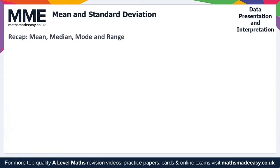The mean is the sum of the data points divided by the total number of data points. For the median, this is the middle value of the data points when they're ordered, or the midpoint between the two middle values if there's an even number of data points. The mode is the value that appears most often, and the range is the difference between the highest and lowest value. The interquartile range is the range after we discard the top and bottom quarters of the data.